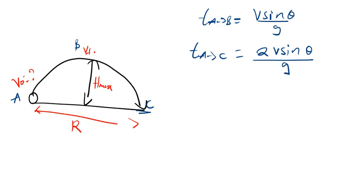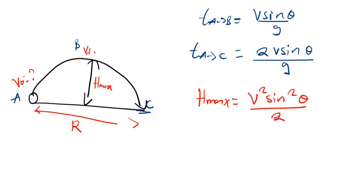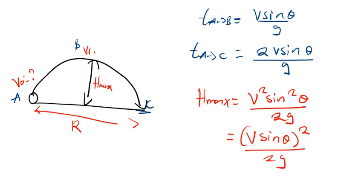Another formula to understand is how to find the maximum height. The maximum height, H max, is given by V² sin² θ divided by 2G. This formula can also be written as: put V sin θ in brackets, square it, then divide by 2G. Both forms are the same.